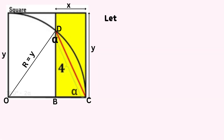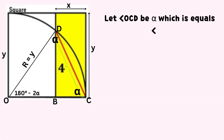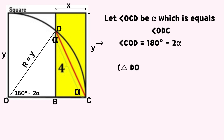Let angle OCB equals angle ODC equals alpha. It implies that angle COD equals 180 degrees minus 2 times alpha. This is because triangle DOC is an isosceles triangle.